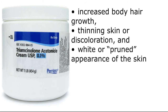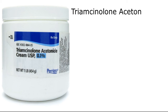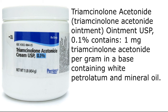Triamcinolone Acetonide Ointment USP 0.025% contains 0.25 mg of Triamcinolone Acetonide per gram in a base containing white petrolatum and mineral oil. Triamcinolone Acetonide Ointment USP 0.1% contains 1 mg Triamcinolone Acetonide per gram in a base containing white petrolatum and mineral oil.